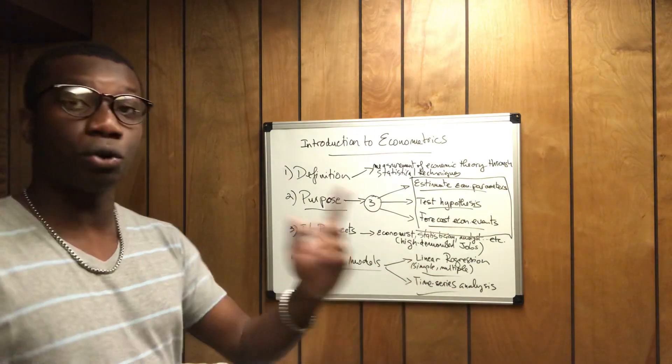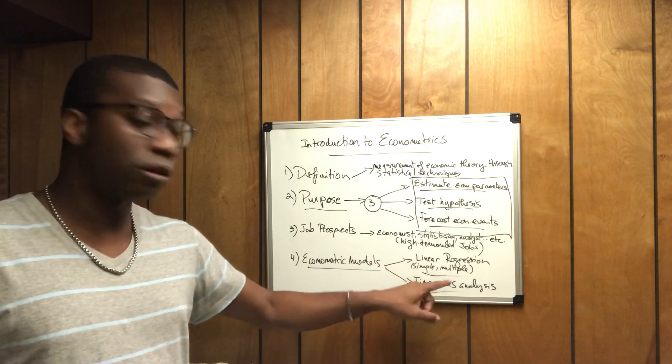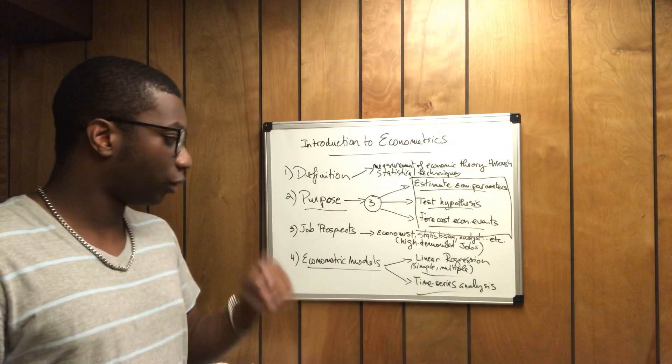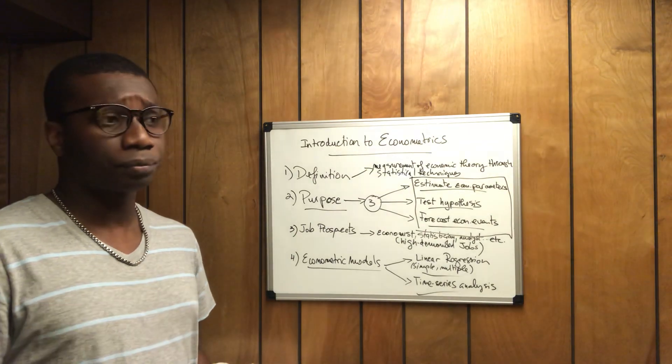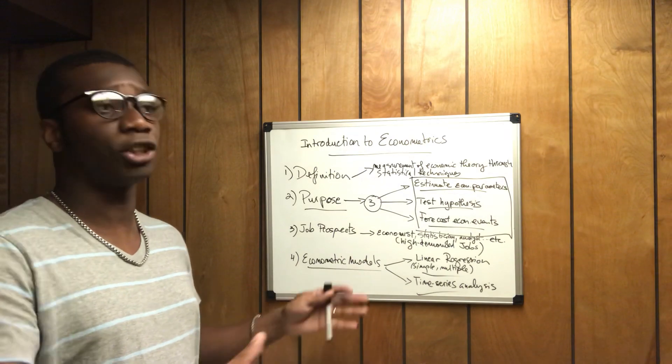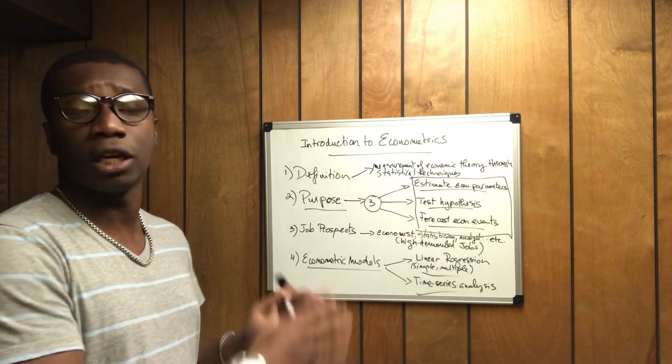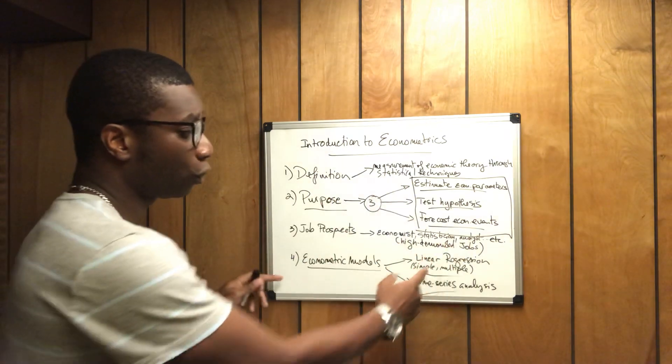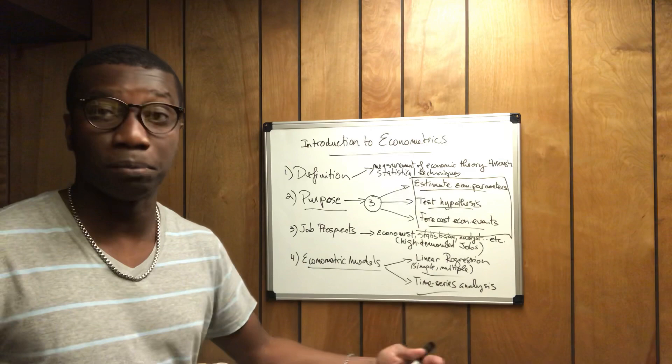But in econometrics, the two main models that we use are the linear regression and the time series analysis. And the linear regression, we're going to talk about that in the next video. We have the simple and the multiple linear regression. So in the next video, I'm even going to divide my lectures into two main branches.